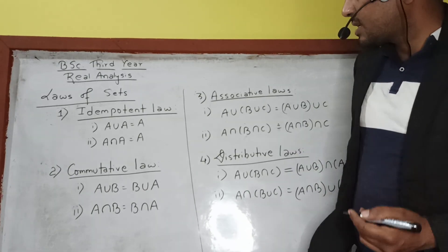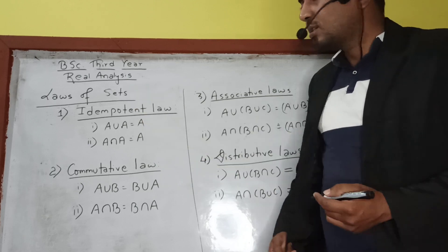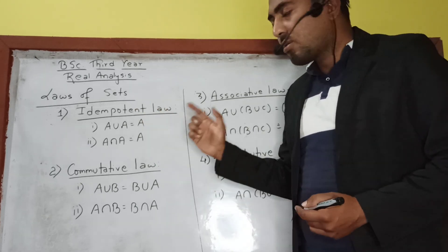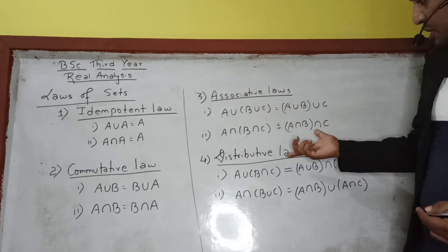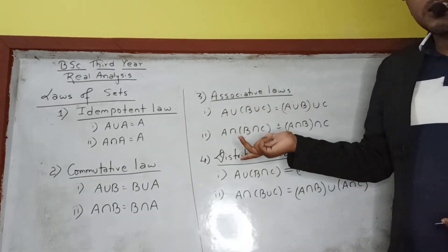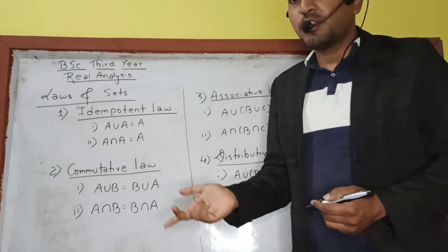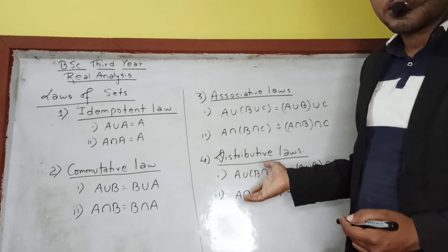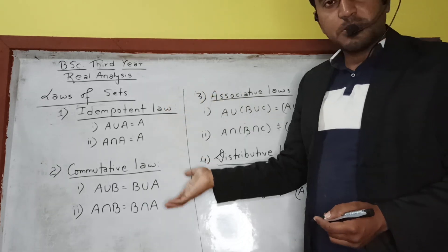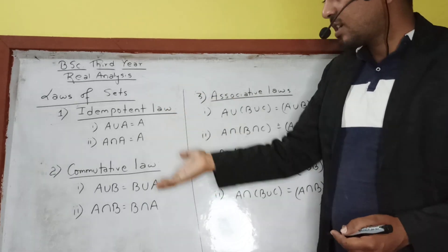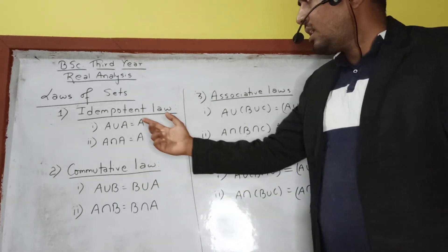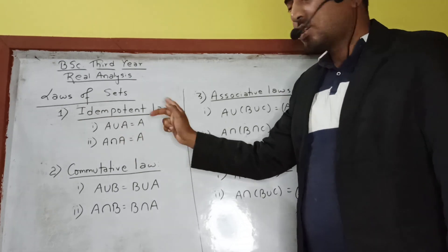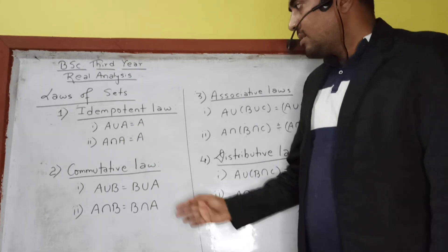Now let us look at some laws of sets. The laws are: idempotent law, commutative law, associative law, and distributive law. These are statements — proofs belong to class 11 level, so here just the statements. Idempotent law: A ∪ A = A and A ∩ A = A. The union or intersection of a set with itself gives the same set.